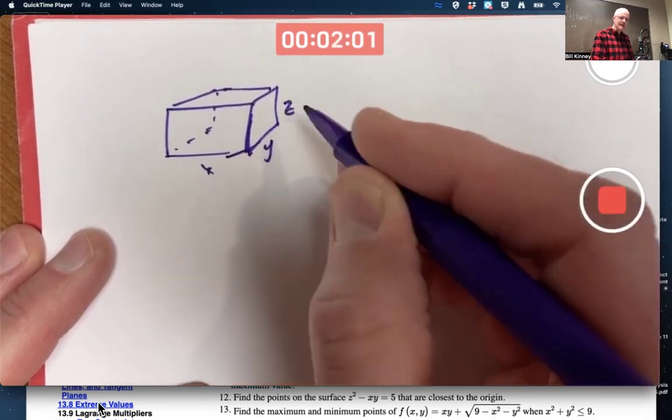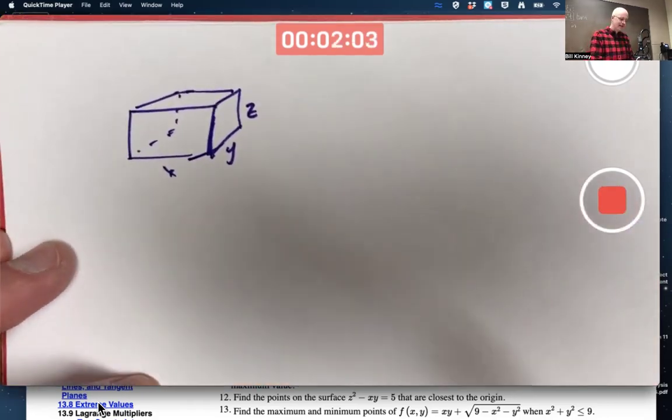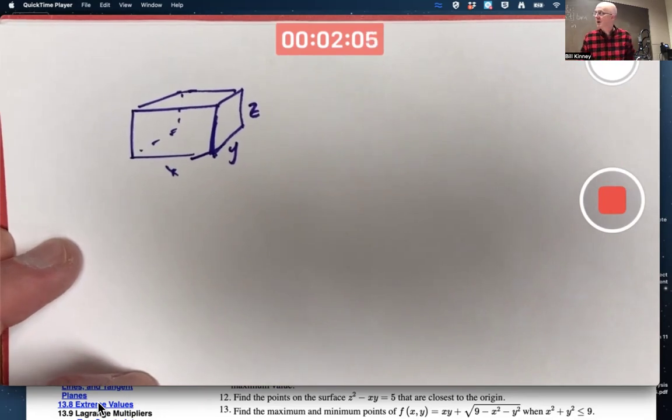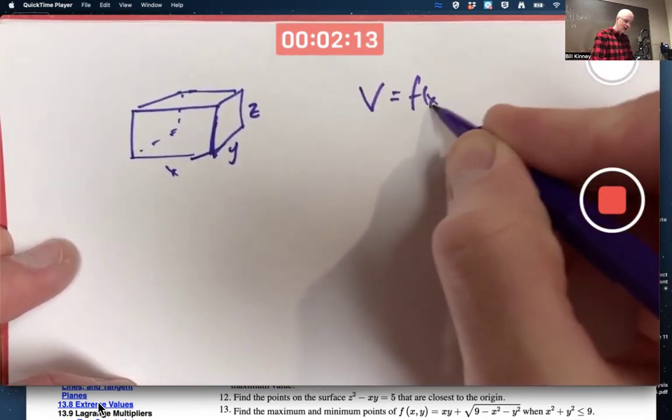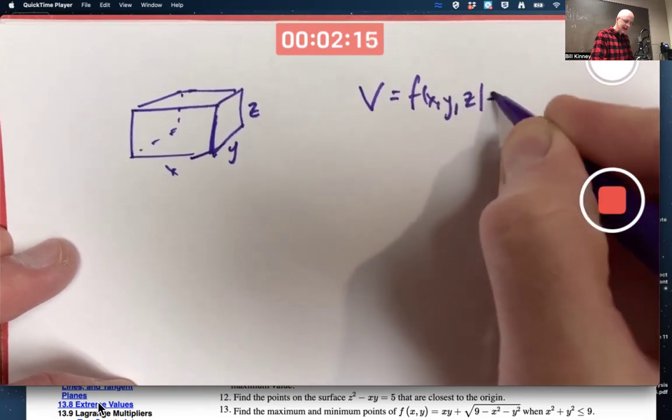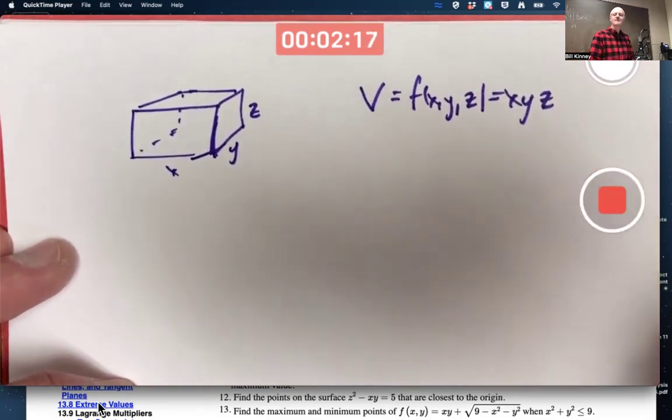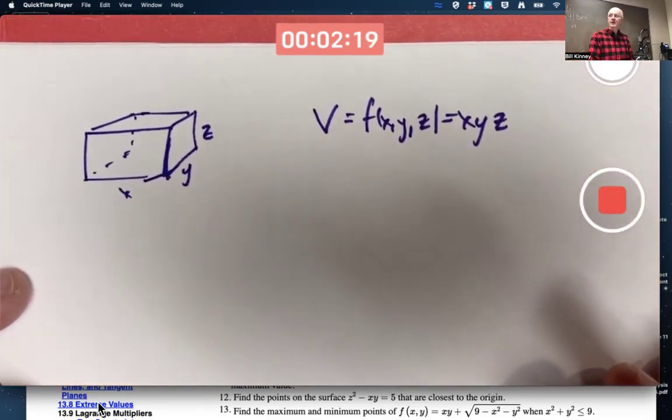X, Y, and Z. Though maybe it ends up being a cube when you maximize the volume. That would be what you would think would happen. And the volume is a function of X, Y, and Z. It's X times Y times Z. It's a function of three variables.